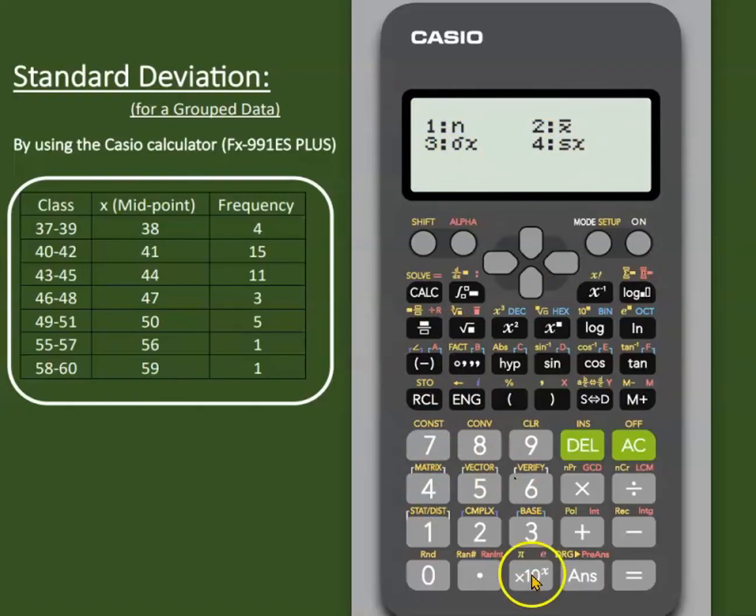Option 3 is the symbol for standard deviation. This is standard deviation.